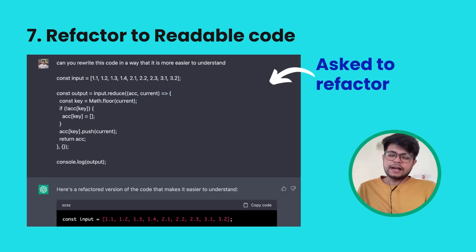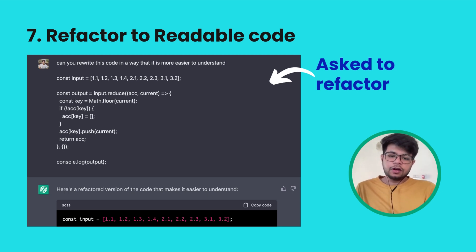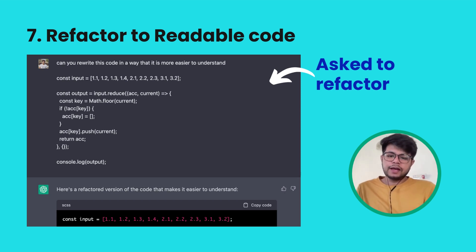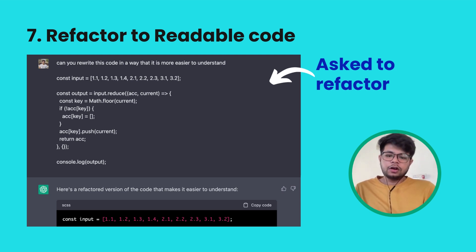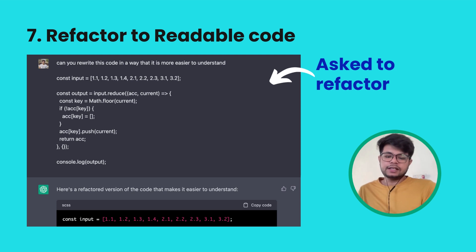The last way you can use ChatGPT's power is to refactor your code to make it much more readable. For example, if you have a function that can be done in three to four lines but you've written a complex ten-line solution, you can copy-paste that code into ChatGPT and ask it to refactor and make it more readable. By your surprise, ChatGPT will not only give you a more readable version but also a more compact and optimal solution. You can even use chain of thoughts and keep asking for further refactoring, and ChatGPT will give you two to three recommendations.